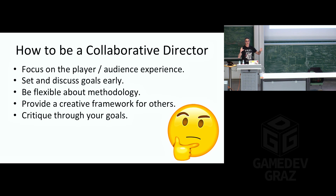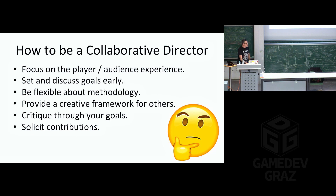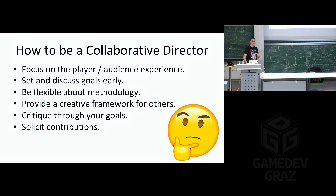Critique things through the goals that you've established. Whenever someone puts in a new feature, a new level, a new character — when you review it critically, evaluate it through the context of the goals you've established. The goals become a lens during development through which you can view and critique things. It's a more objective way to view what people are putting into the game, and it allows you to remove individual egos from the process and focus on what you're trying to collectively accomplish. Solicit contributions from the team. Not everyone is aggressive enough to get up in your face and tell you all their ideas. A lot of people can be intimidated by authority or feel their input is not valuable. The process of asking can be very rewarding for both you and the people on the team.